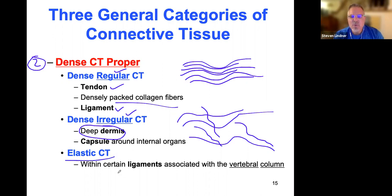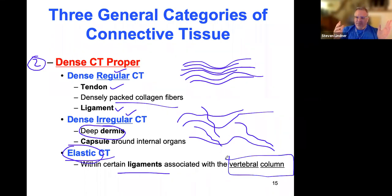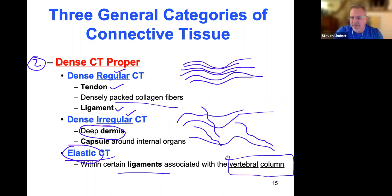Elastic connective tissue is found in certain ligaments that need more elasticity. Looking at the vertebral column — made up of 24 freely movable vertebrae — in my 25–26 years of practice, I have never seen an individual come in with a dislocated vertebral segment. I see subtle misalignments, but nothing where there's a true dislocation.